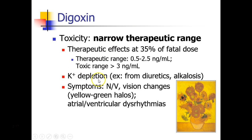Patients can develop toxicity from potassium depletion due to diuretics or alkalosis. Symptoms of digoxin toxicity include nausea and vomiting, vision changes especially with yellow or green halos, and atrial or ventricular dysrhythmias.